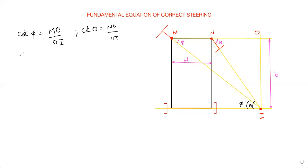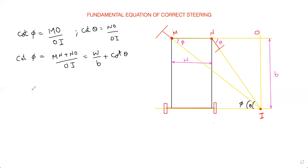So cot phi gives MO over OI, where MO equals MN plus NO. Therefore, cot phi equals MN over OI plus NO over OI. Now MN is the track width W, and OI is the wheelbase B. So we can write: cot phi equals W over B plus cot theta. Rearranging, we get the fundamental equation: cot phi minus cot theta equals W over B, that is, track width divided by wheelbase.